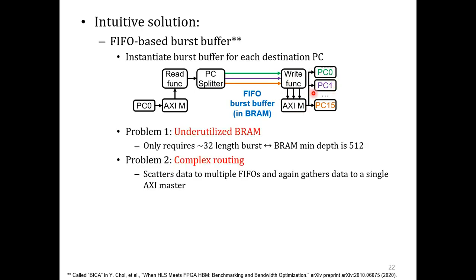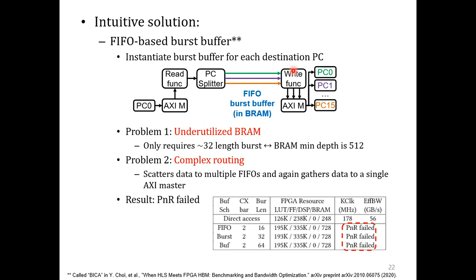But we found that this approach creates new problems. We typically need a burst length of around 32 to saturate the maximum bandwidth. But BRAM has a minimum depth of 512, so the FIFO burst buffer will be underutilized. The greater problem is that this architecture scatters data to multiple FIFOs, and then again gathers the data to a single function. This complicates the PNR process. Due to the high resource usage and the routing complexity, we were not able to route this design.